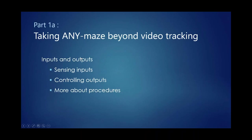The terminology of inputs and outputs comes from computing, where an input is something like a keyboard or mouse and an output is something like a screen or printer. In AnyMaze, we use it to refer to inputs such as a lever the animal could press or a photo beam it could break, and outputs such as a lamp we might turn on or a shocker delivering an aversive stimulus. You'll typically want to control outputs based on what's happening during a test — for example, turning a light on when something happens — and that's done using procedures.